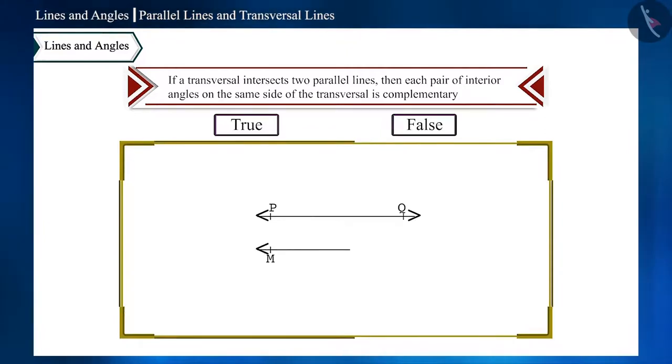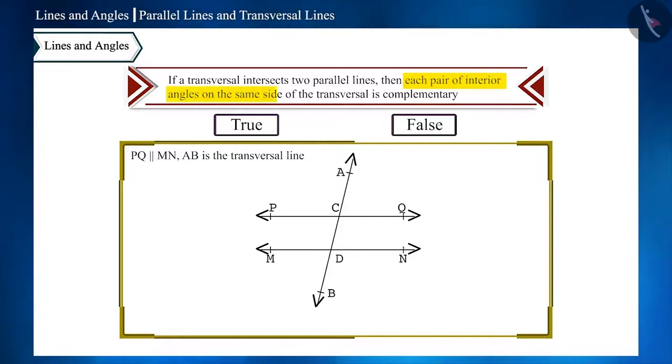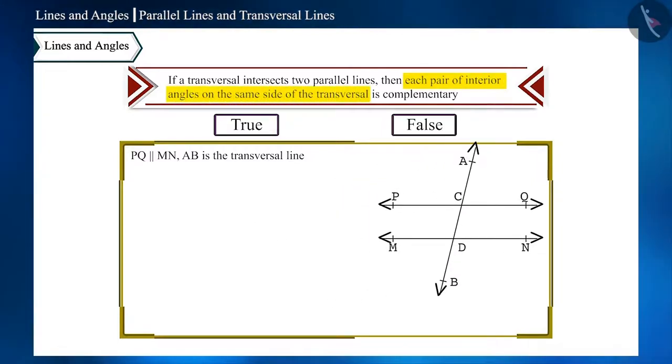PQ and MN are two parallel lines and the transversal AB intersects these two lines at points C and D respectively. Interior angles formed on the same side of transversal, that is angle PCD, angle MDC, and angle QCD, angle CDN, are complementary angles.